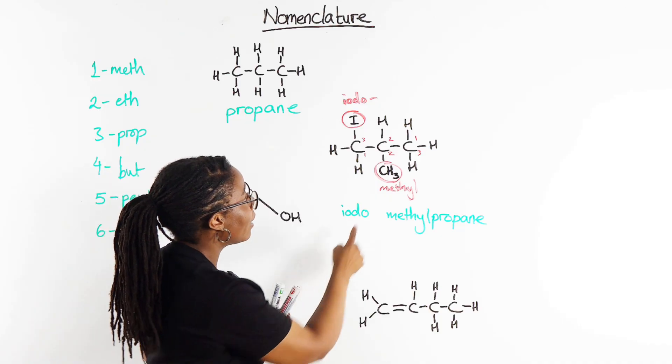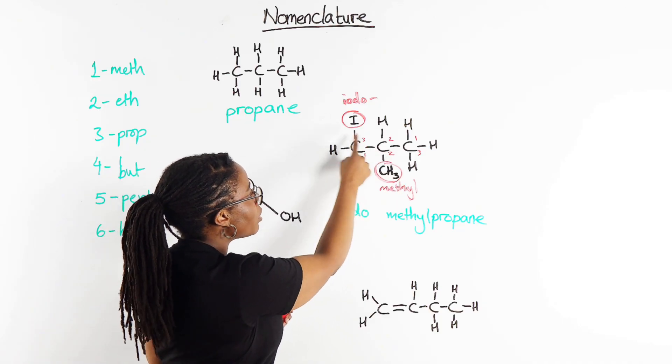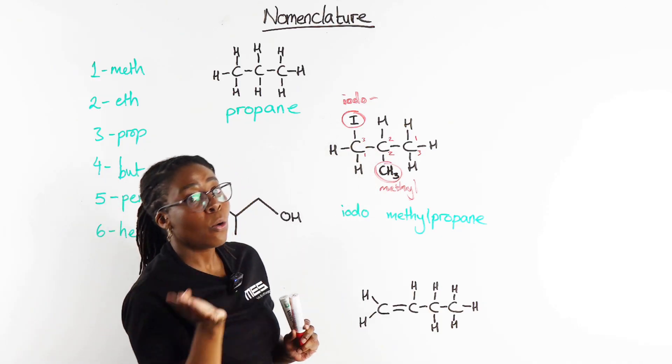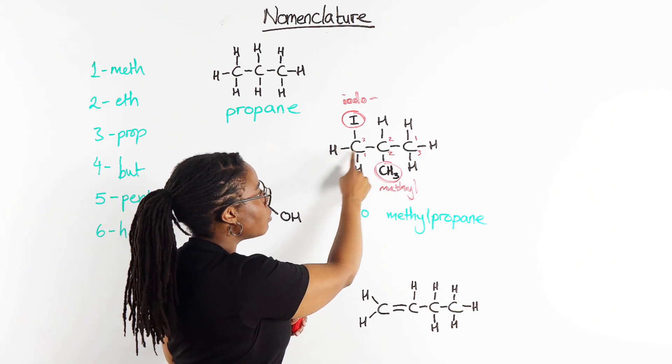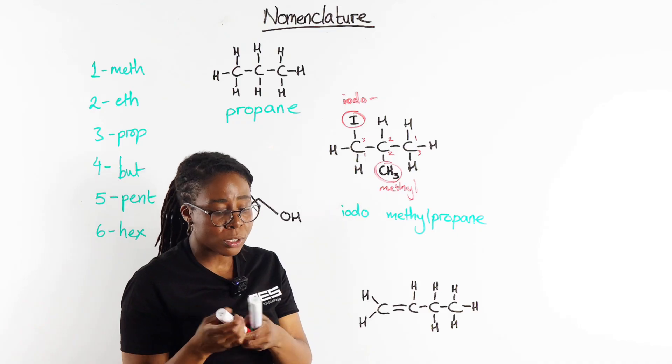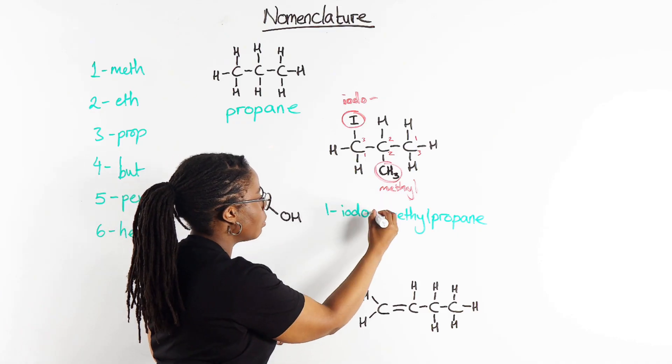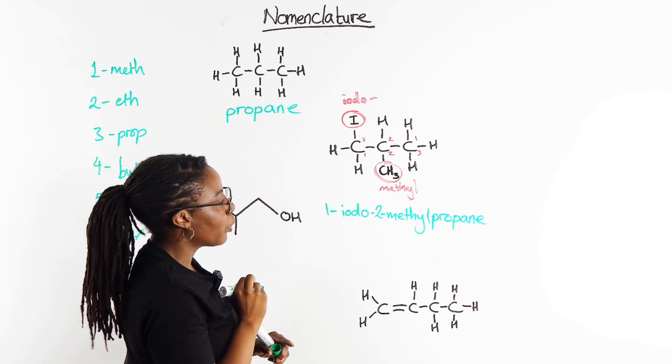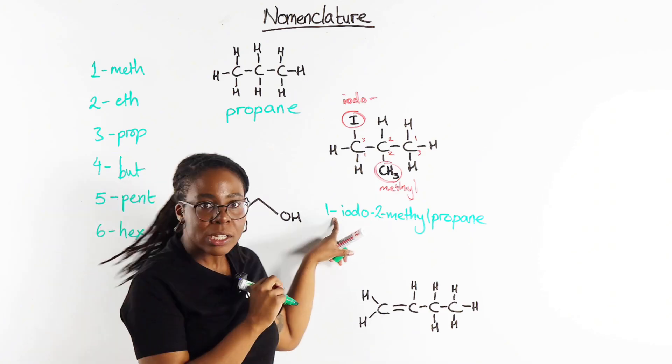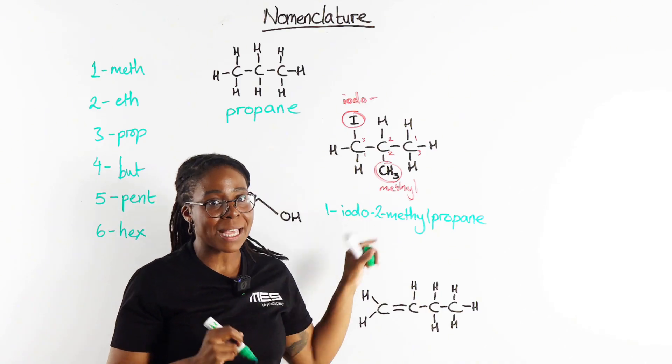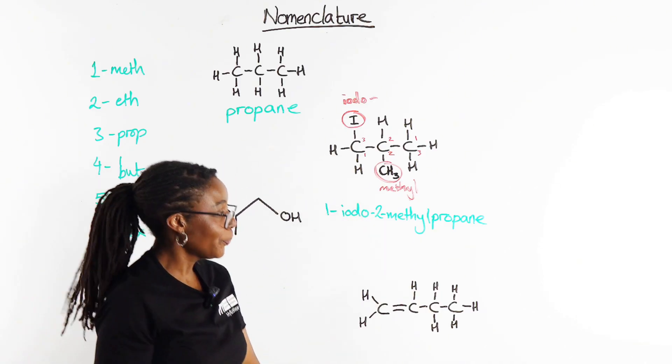Now the one that we choose is the one that gives us the smallest possible numbers. So we could have 3-iodo 2-methyl or we could have 1-iodo 2-methyl. Of course the smaller one is 1-iodo 2-methylpropane with dashes or hyphens between any numbers and any letters.